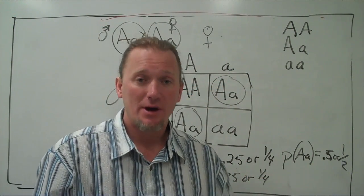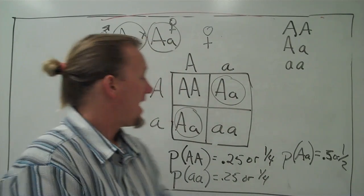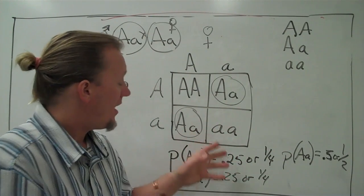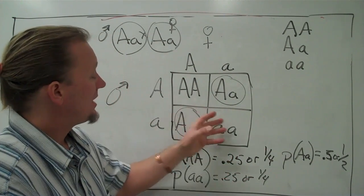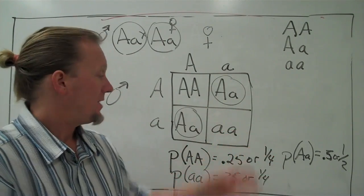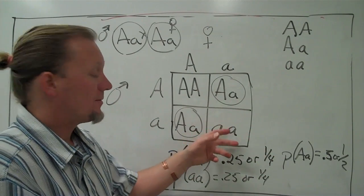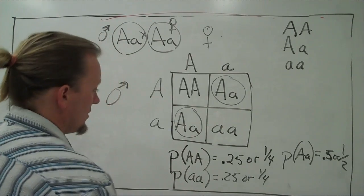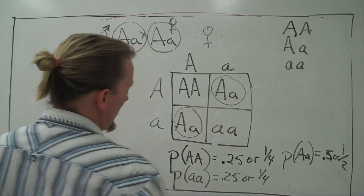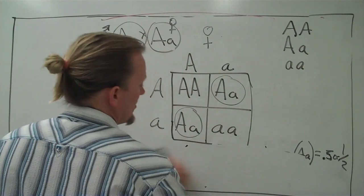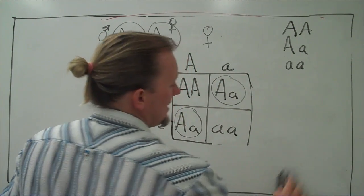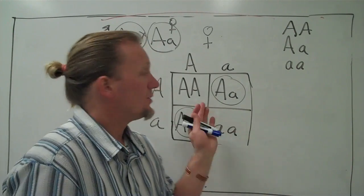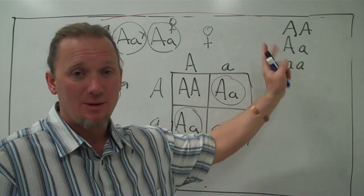This is called a Punnett square. The purpose is to calculate the probability of a particular genotype being formed in the zygote from a mating. The easiest way to learn this is to do every possible combination.